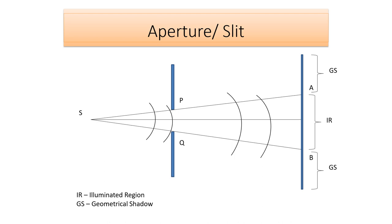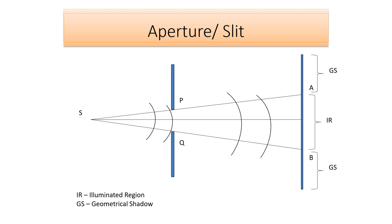Here we have a point source of light S and this is our screen. In between the point source and the screen, an aperture PQ is placed. If you go by the rectilinear propagation of light, in the region AB you will be expecting complete illumination, whereas above A and below point B, we are expecting a dark region — that is a geometrical shadow region.